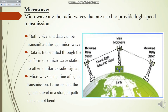Next is microwave. Microwaves are radio waves that are used to provide high-speed transmission — meaning microwave is a type of radio wave with the help of which data moves from one place to another. You can see this figure showing microwave signals. Both voice and data can be transmitted through microwaves.